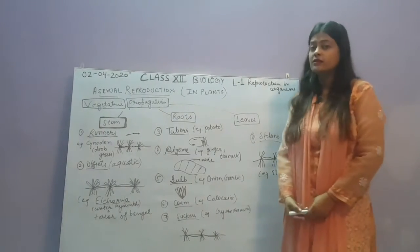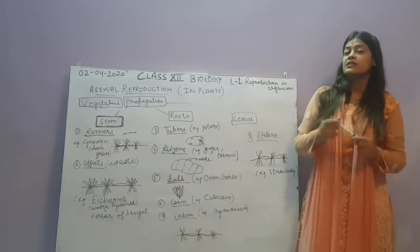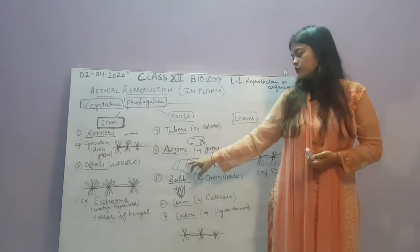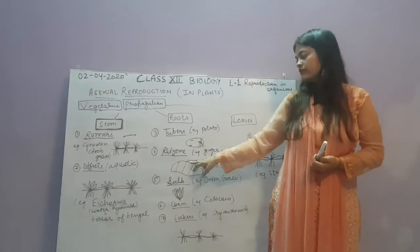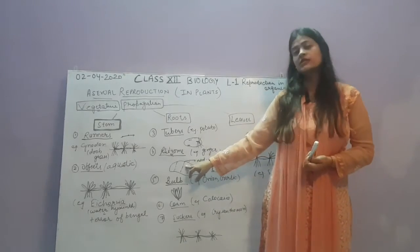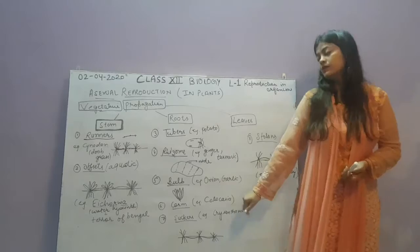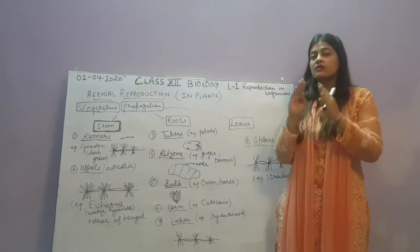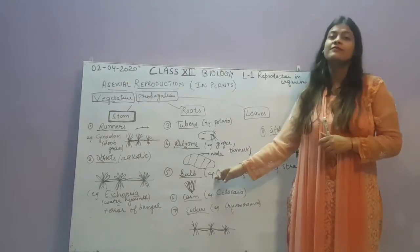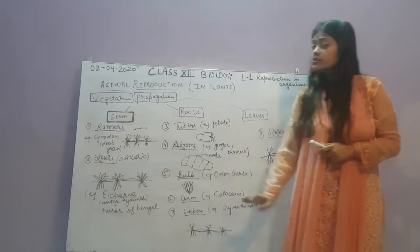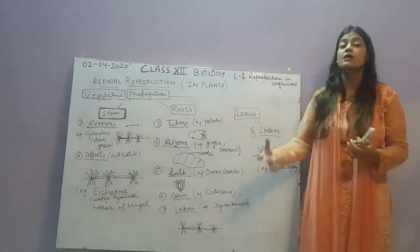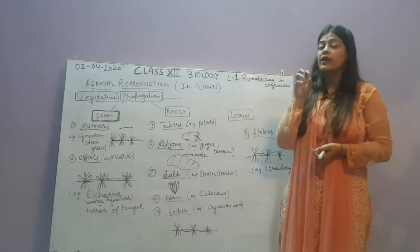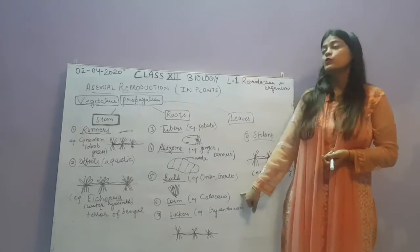Next is rhizome, with examples of ginger and turmeric. In ginger, the line-like structures on the surface act as nodes, and new plants come out from these structures. Next is bulb, with examples of onion and garlic. The scaly layers present in onion and garlic act as vegetative parts for reproduction. Next is corm, with the example of colocasia — a vegetable that has node-like structures to grow new plants.